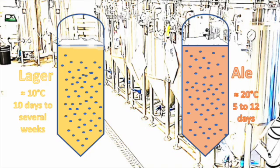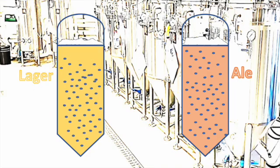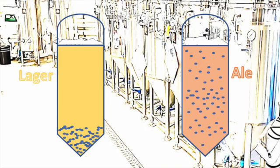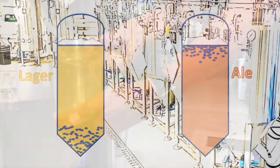Lagers, on the other hand, are fermented at cooler temperatures and the fermentation process is longer. Lager beers tend to be crisp and refreshing with cleaner, more delicate and mellow flavors. After fermentation is done, lager yeast settles to the bottom of the fermentation tank and ale yeast tends to flow to the top of the vessel.